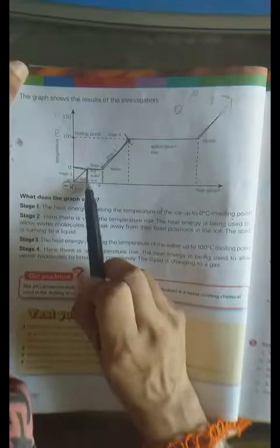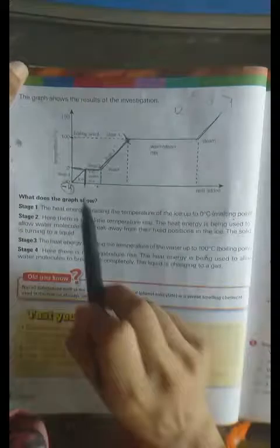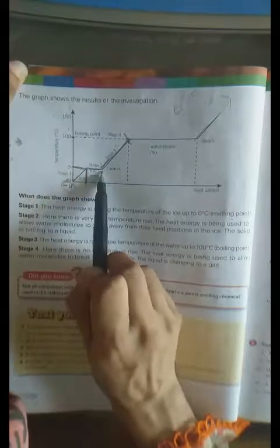So in zero degree centigrade, ice melts. Ice will melt. Temperature will rise. It means heat is added. Temperature will rise and ice melts into water. And in stage two, here is a little temperature rise. You can look at this straight lining. Like a little temperature rise. And also the molecules break away from their fixed position and convert ice into liquid form.